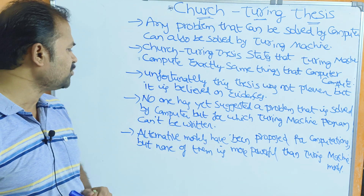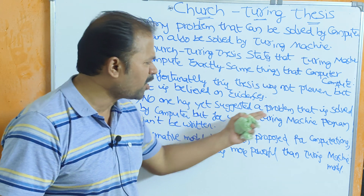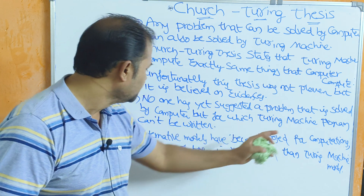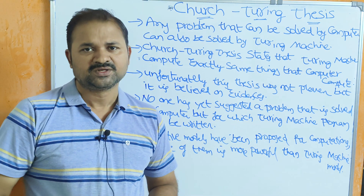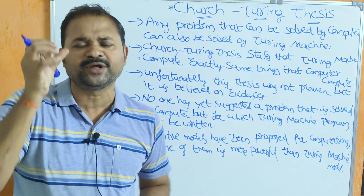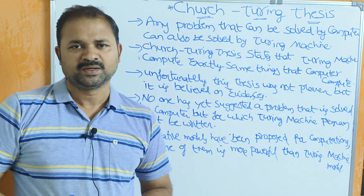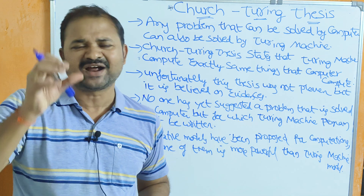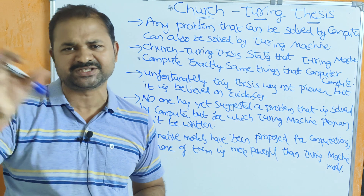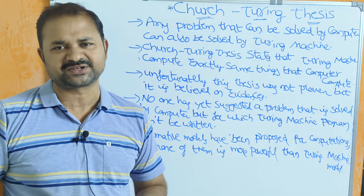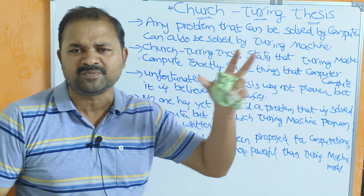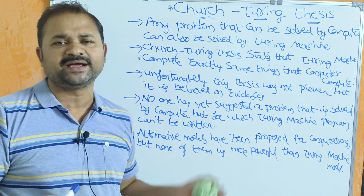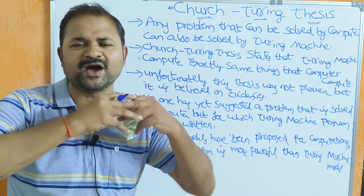The next point: no one has yet suggested a problem that is solved by a computer but for which a Turing machine program cannot be written. In other words, there is no known problem that a computer can perform but that a Turing machine cannot. We do not have any such theorem or counterexample.